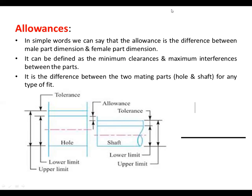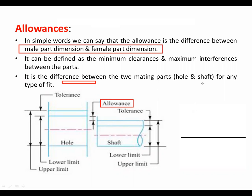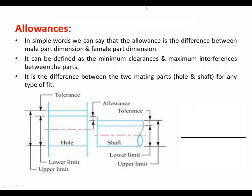Now see, in this diagram the allowance is shown over here. It is the difference between male part dimension and female part dimension, or we can say the difference between the hole and shaft. Here this is the hole and this is the shaft. The difference between these two dimensions is called allowances. This is the allowance, the difference.